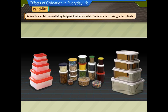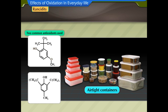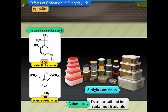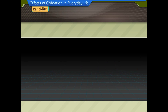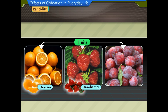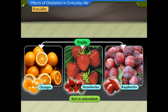Rancidity can be prevented by keeping food in airtight containers or by using antioxidants. Two common antioxidants used in food to prevent oxidation are BHA (Butylated Hydroxyanisole) and BHT (Butylated Hydroxytoluene). Antioxidants are substances used to prevent oxidation of food containing oils and fats. Vitamins are natural antioxidants. The best source of vitamins is fruits and vegetables. Fruits like oranges and berries like strawberries and raspberries are rich in antioxidants. Antioxidants strengthen the immune system and fight aging.